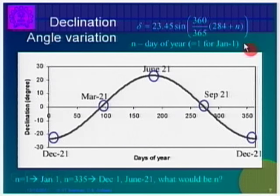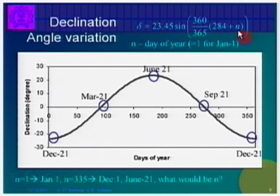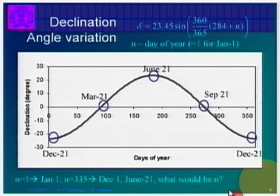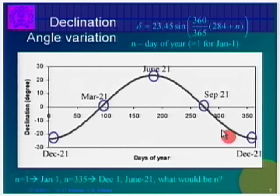The declination angle changes throughout the year every day, and the equation is: δ = 23.45 × sin(360/365 × (284 + n)), where n is the day of the year. n = 1 for January 1st, n = 365 for December 31st, and n = 335 for December 1st. Think quickly: what should be the value of n for June 21st? It is almost the middle of the year, so the value will be about 172. You can do the precise calculation.